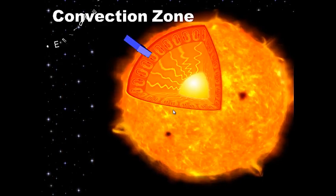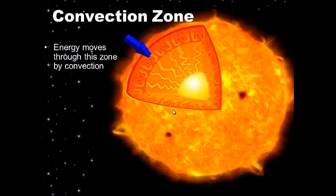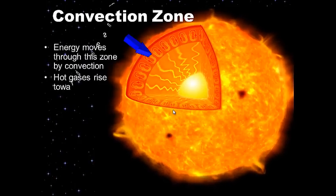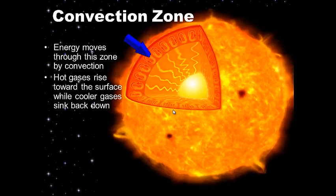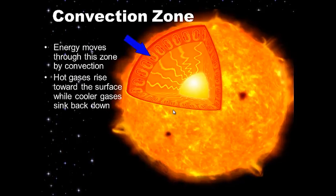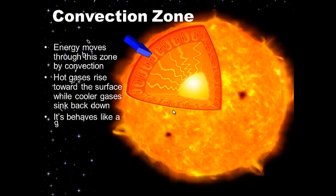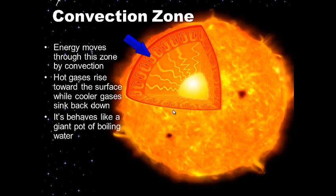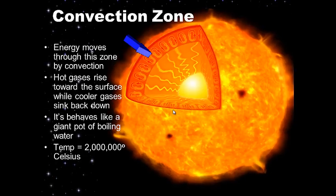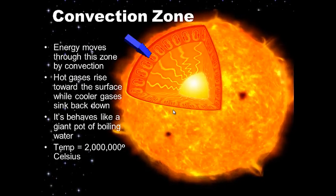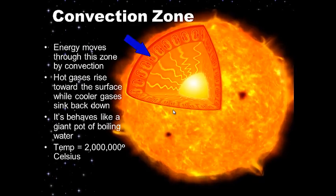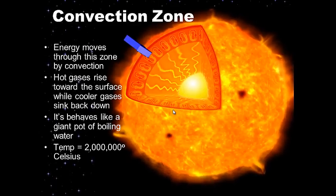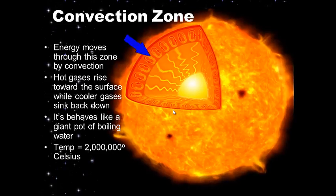Out past the radiative zone is the convection zone. Energy moves through this zone by convection — hot gases rise toward the surface while cooler gases sink back down. It behaves like a giant pot of boiling water. The temperature is about two million degrees Celsius. Hot matter rises, and as it rises it cools; heavier, cooler matter sinks back down.